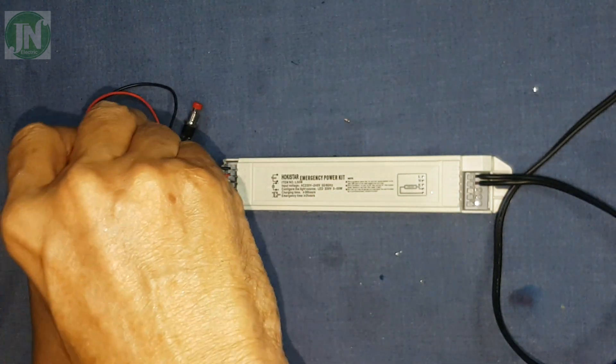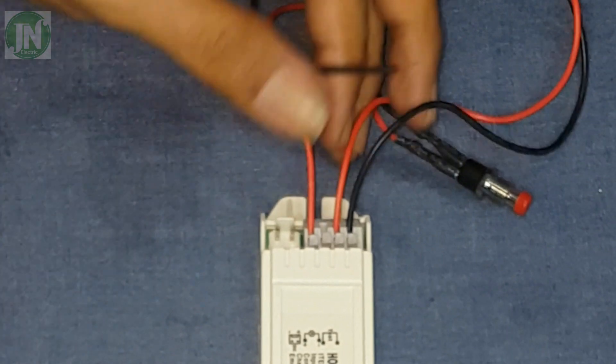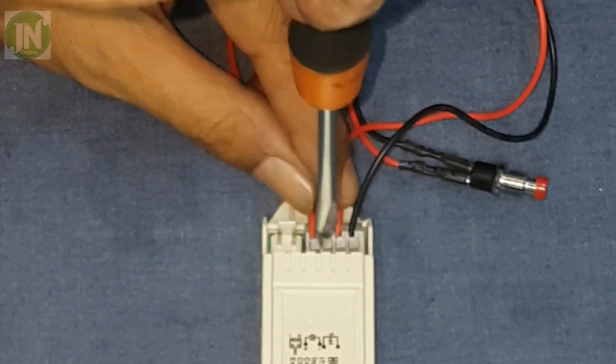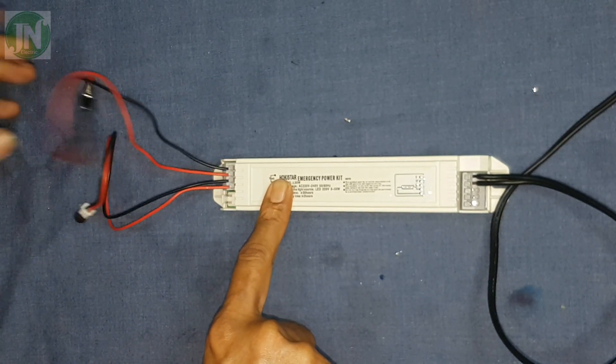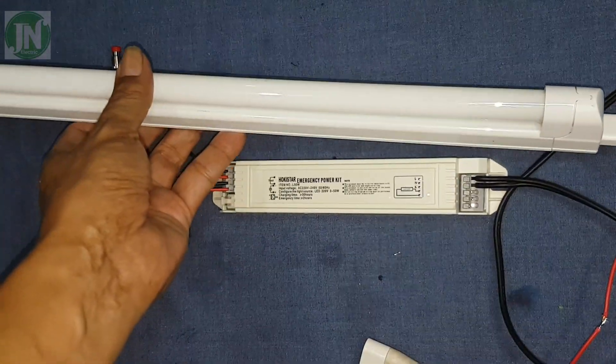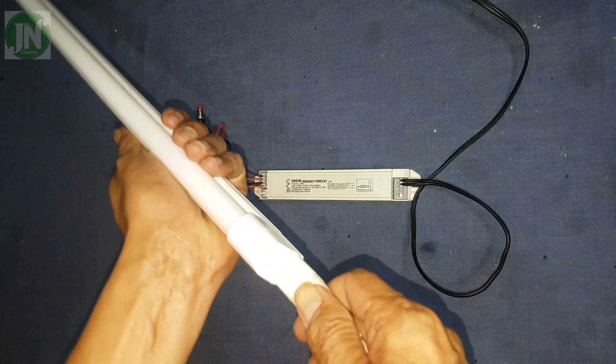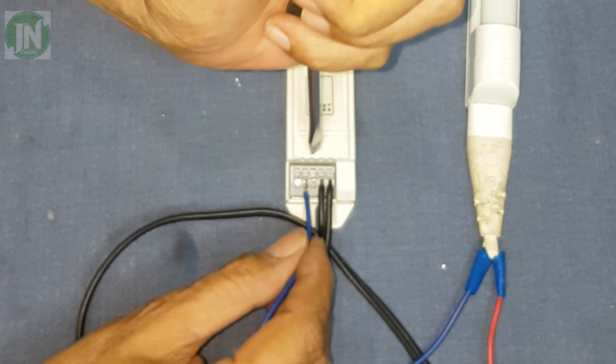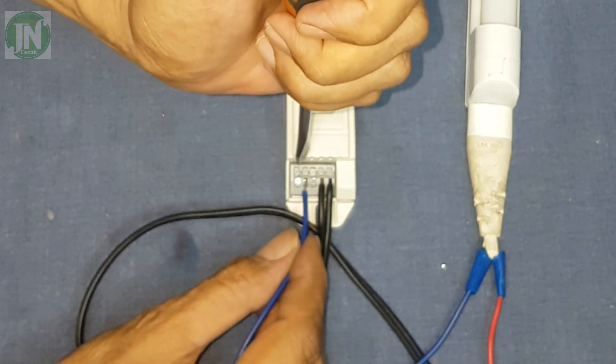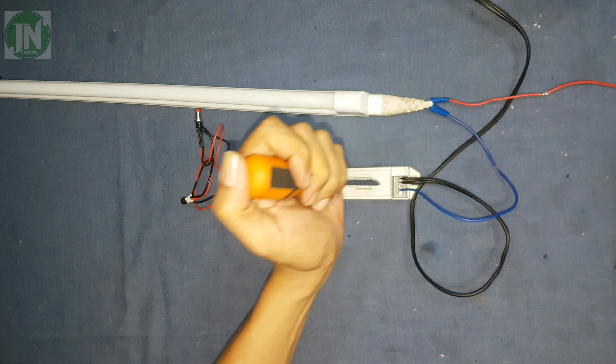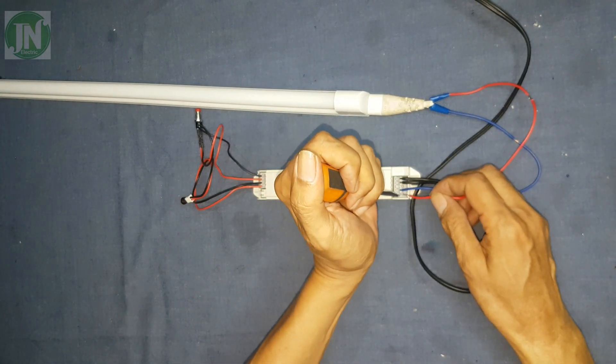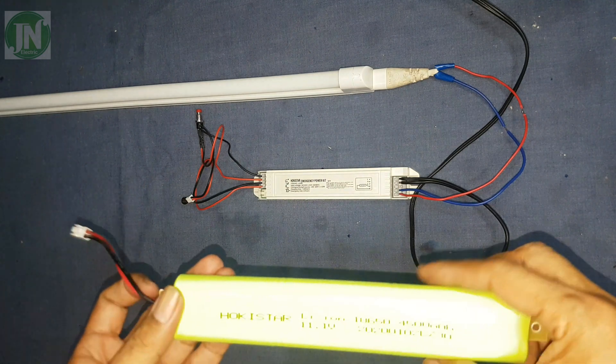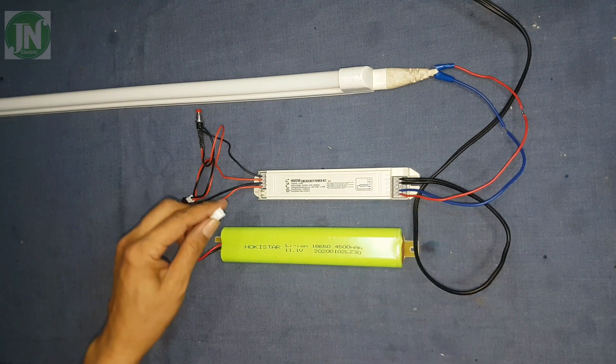You can use a screwdriver to help push the terminal pins. Connect the red LED wires to plus and black to negative. The last is the cable connection for the LED light. I almost forgot to connect this battery cable.